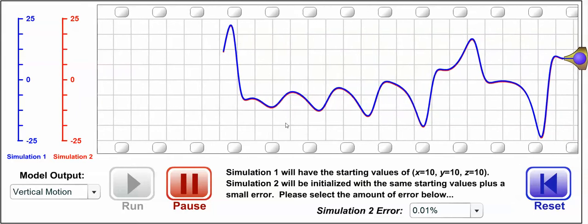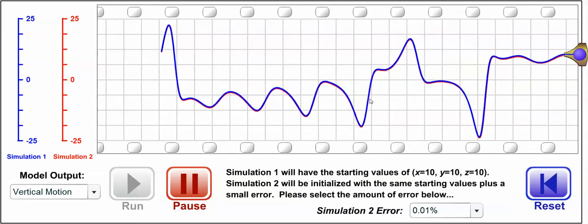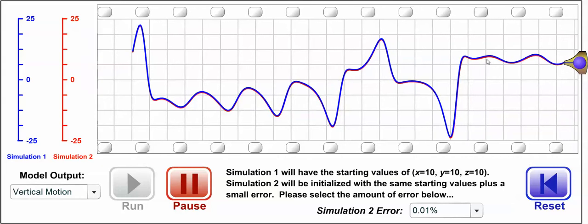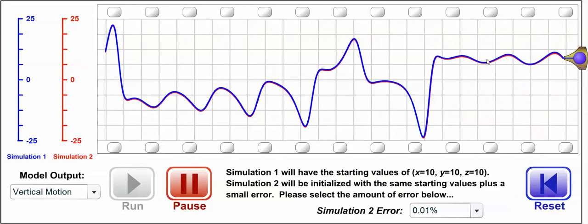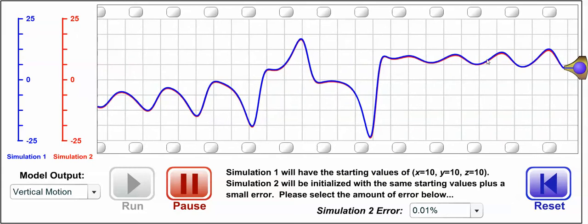We see that the simulation's predictions for vertical motion are basically identical initially, with perhaps some very small differences where you can pick out the difference between the blue and red traces from time to time. But overall, there's near-perfect agreement.